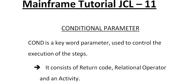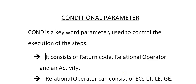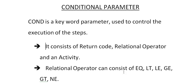What is exactly a conditional parameter? COND is a keyword parameter used to control the execution of steps. It consists of a return code, a relational operator, and an activity. The relational operator can be equal to, less than, less than or equal to, greater than or equal to, greater than, and not equal to.